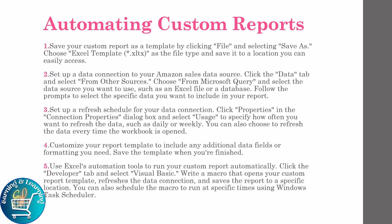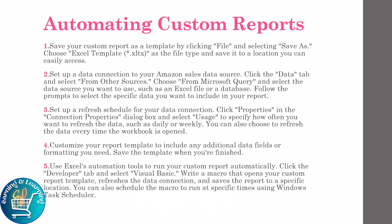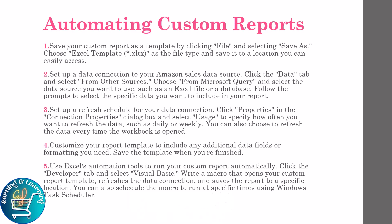Set up a refresh schedule for your data connection. Click Properties, and in the Connection Properties dialog box, select Usage to specify how often you want to refresh the data — such as daily or weekly. You can also choose to refresh the data every time the workbook is opened. Customize your report template to include any additional data fields or formatting you need, then save the template. Use Excel automation tools to run your custom report automatically — click the Developer tab, select Visual Basic, and write a macro that opens your custom report template, refreshes the data connection, and saves the report to a specific location. You can also schedule the macro to run at a specific time using Windows Task Scheduler.